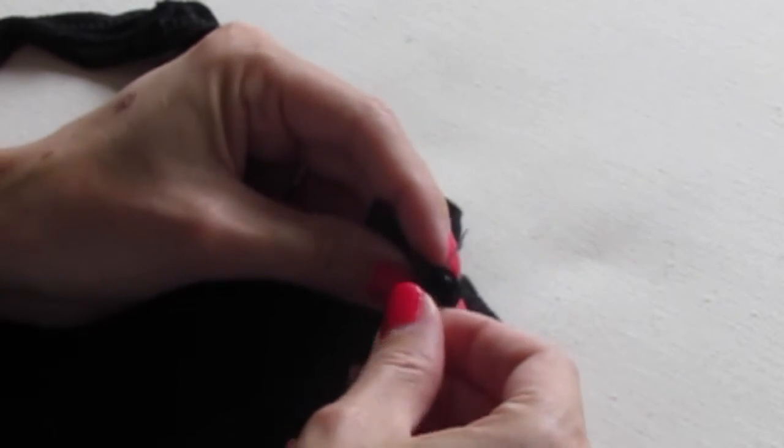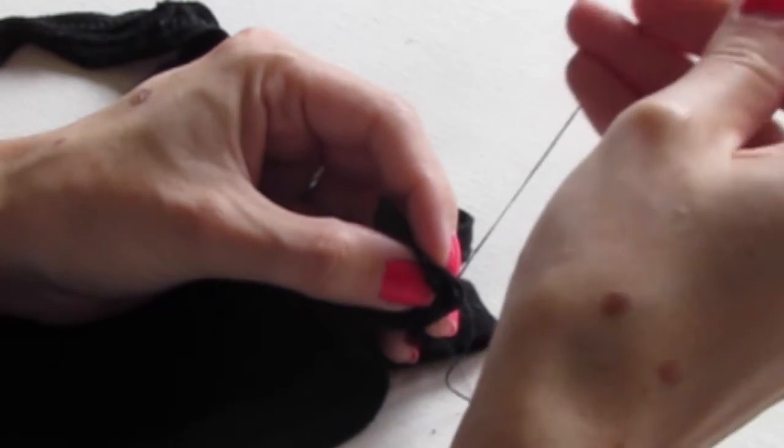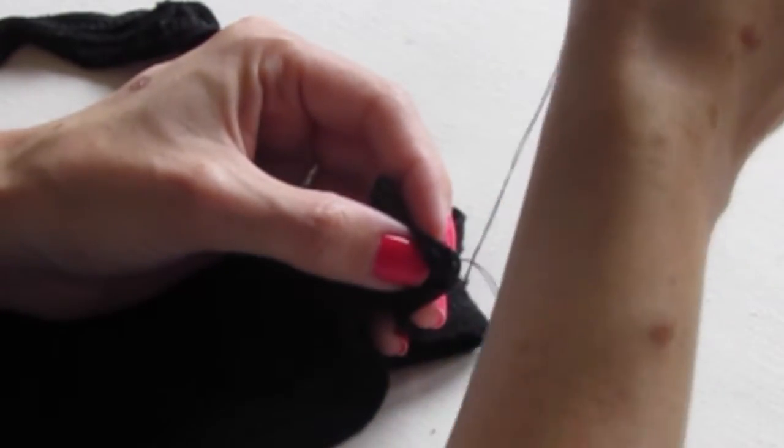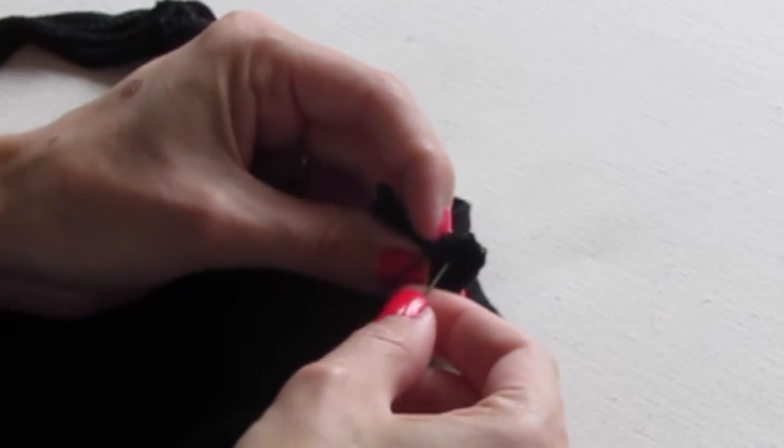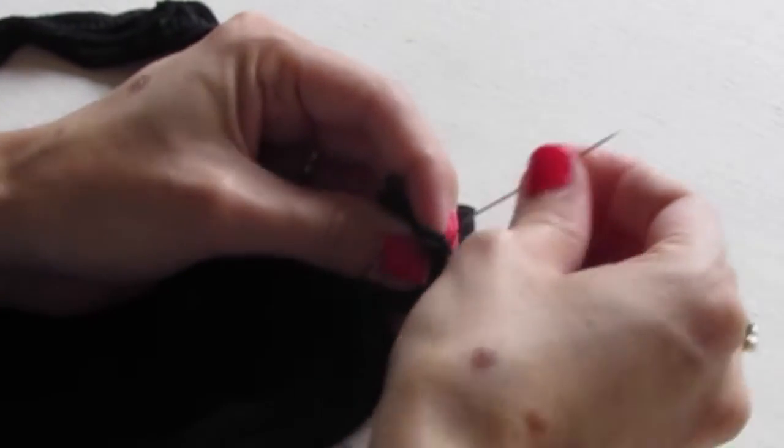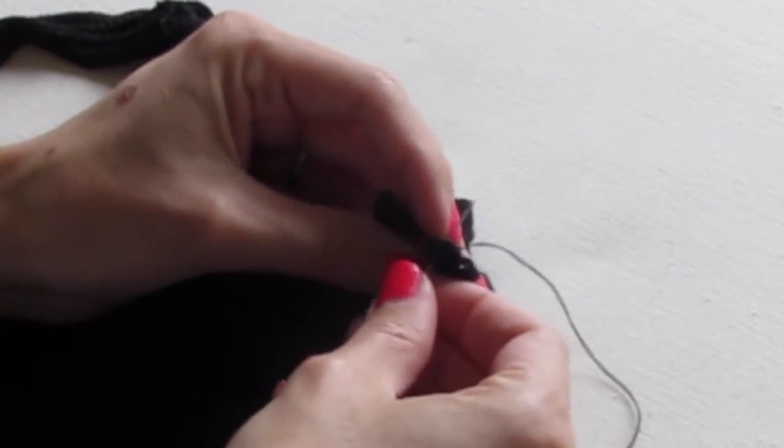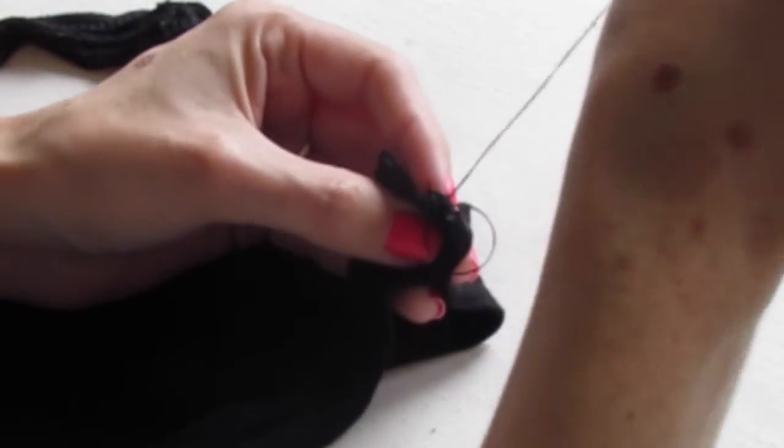So now we're going to sew the strap together by going in through the same side, putting that needle again through the loop and pulling it tight. So we're always going into the fabric from the side closest to you and out through the fabric on the side away from you.